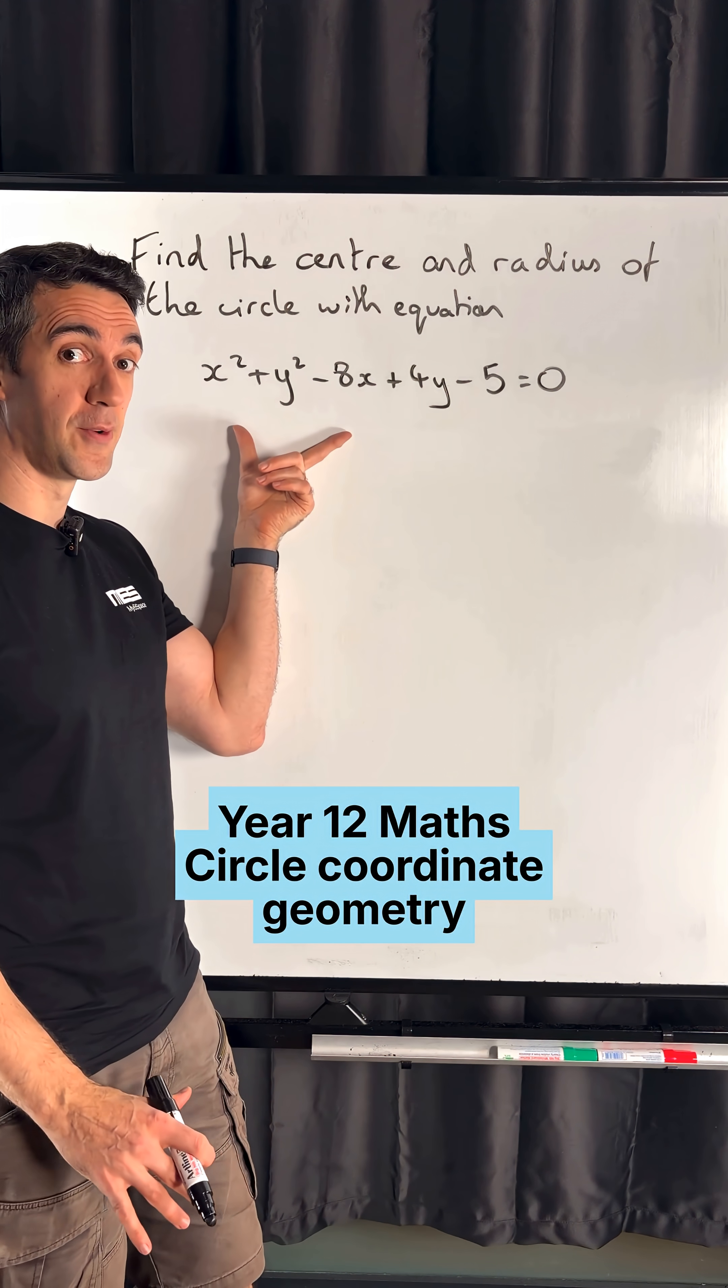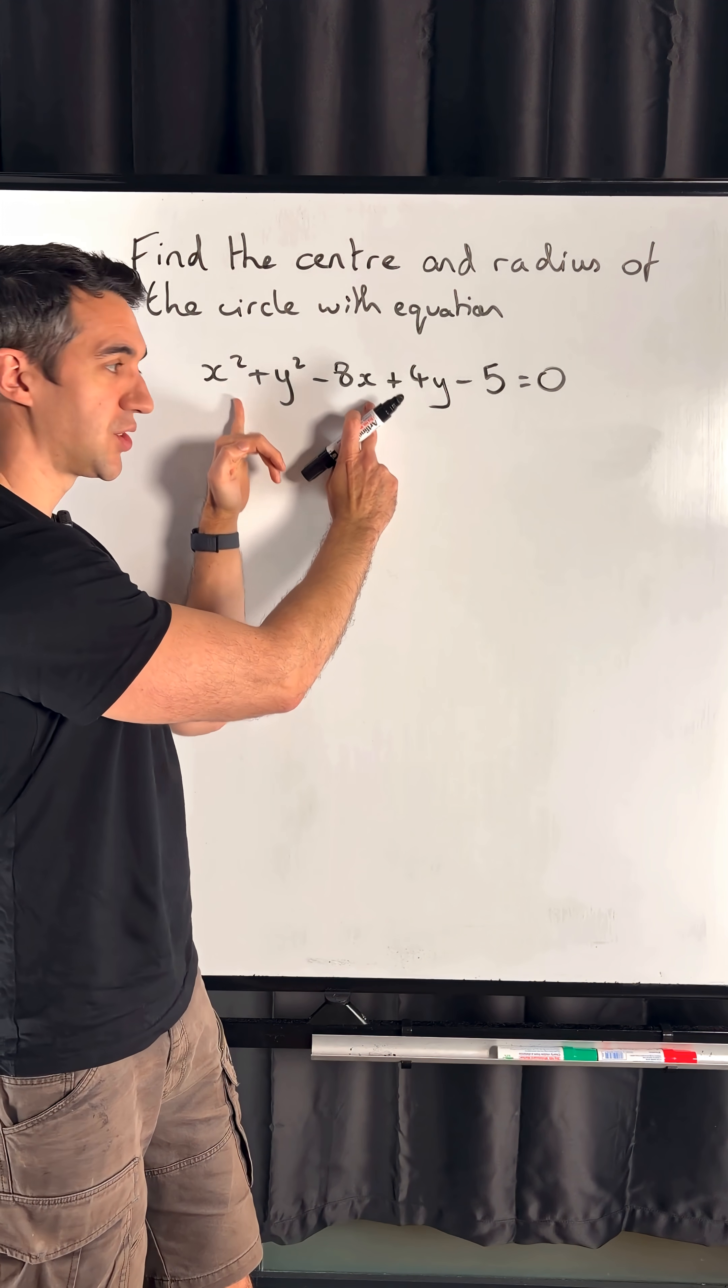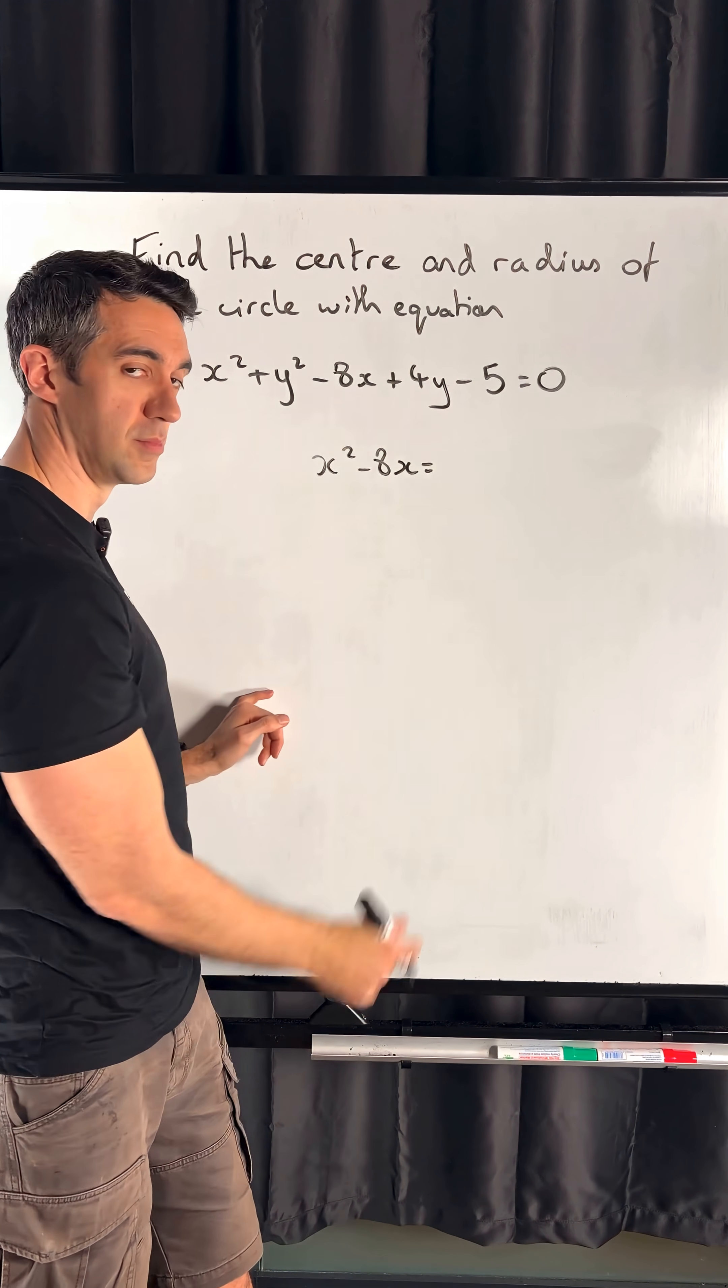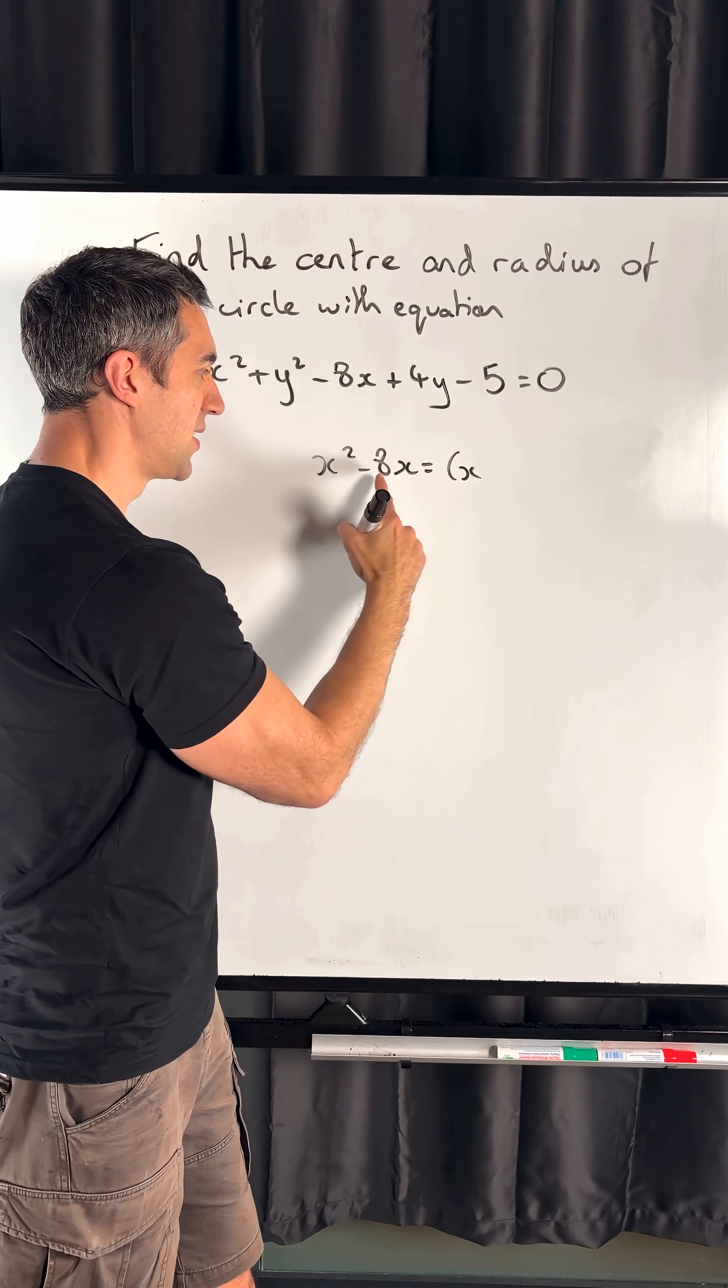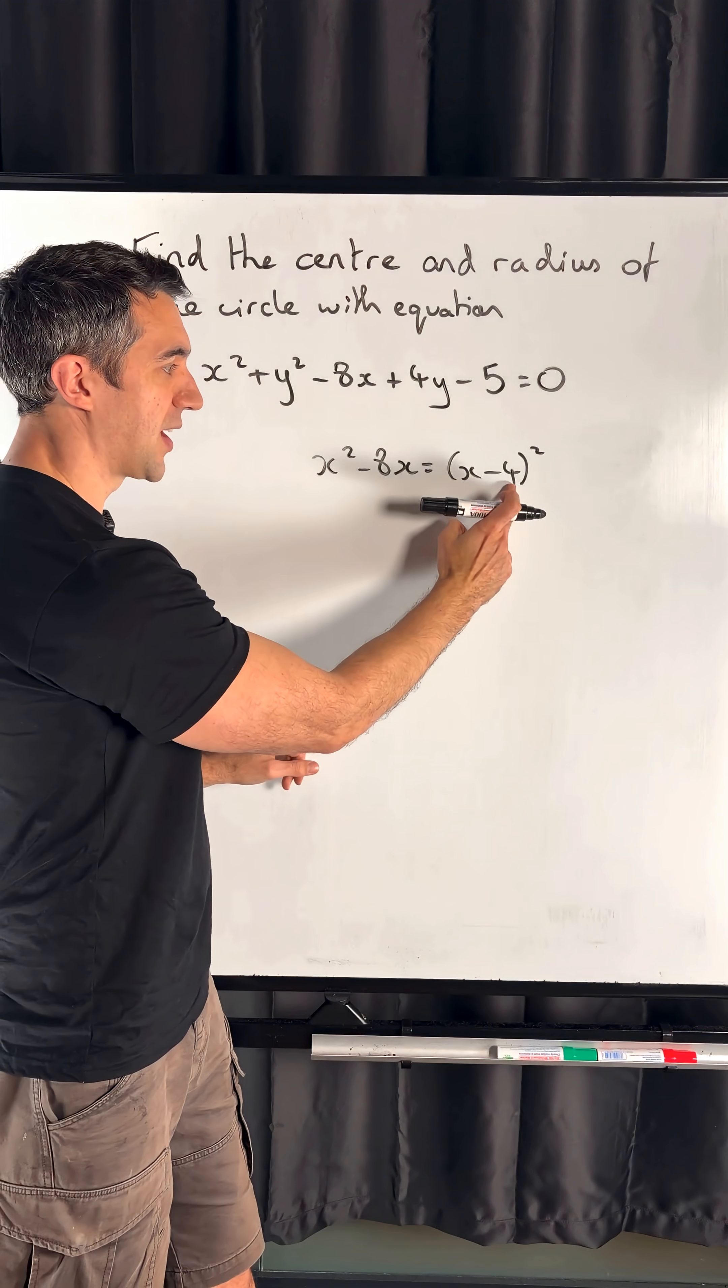We know we're going to take our x squared and minus 8x term, put those together and write it in completed square form. So we're going to put our x, half the minus 8, stick our squared on the bracket, and then we're going to get rid of this 4 squared outside so minus our 4 squared.